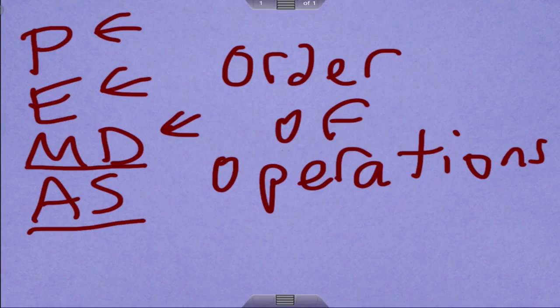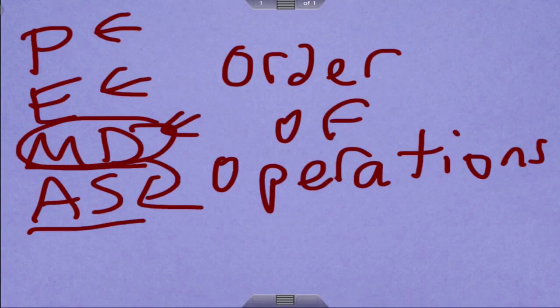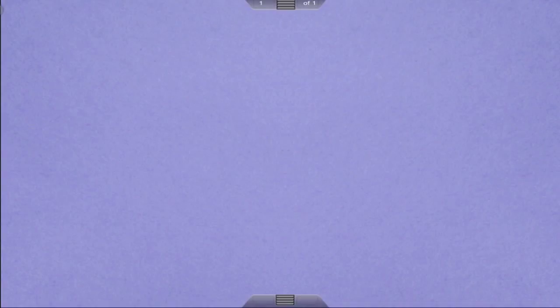So if we have multiplication first, then division, we do the multiplication first. If we have division before the multiplication, we do division first, it doesn't matter. But these two, multiplication and division, always come before addition and subtraction. Alright, so let's look at a couple of these.